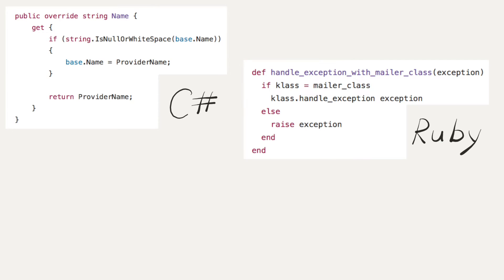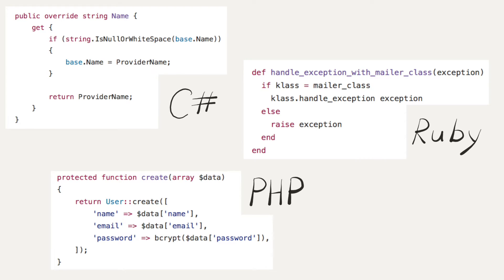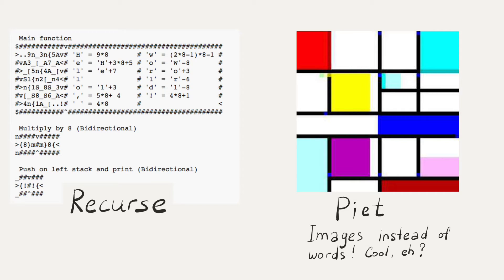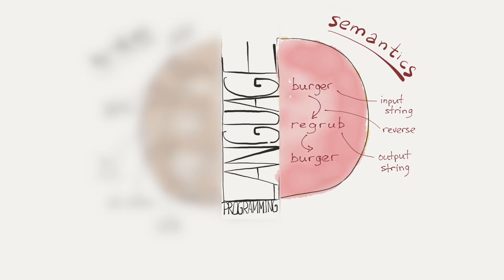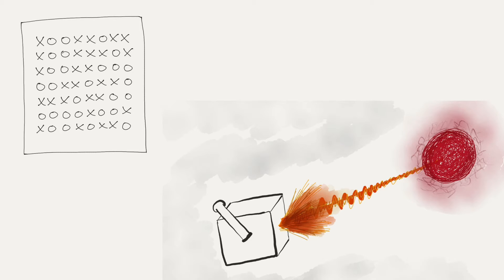You will see that some programming languages have similar syntax and some have exotic, unusual syntax. The semantics or the meaning is harder to see because it's not explicit. What is the meaning of this code? It's FireFlash, as we know.